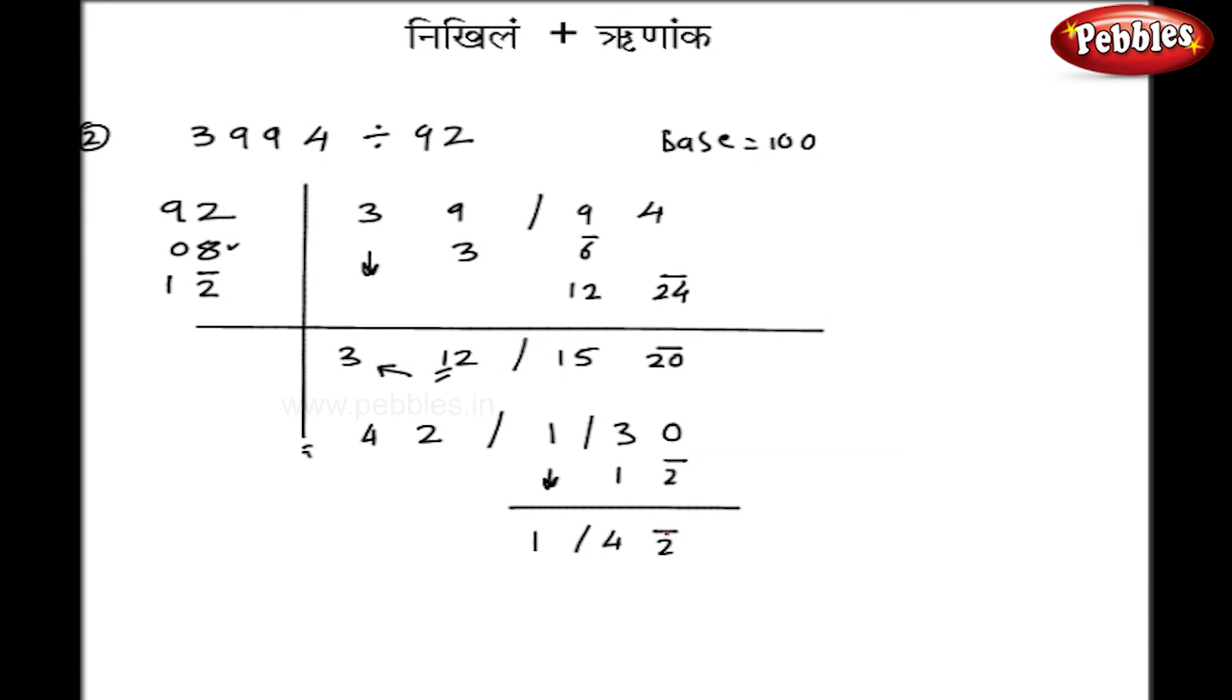So I will solve further. So I get 1 and 38 on the right hand side. So this one will be added to my 42. So my quotient becomes 43 and my remainder is the last remainder that is 38.